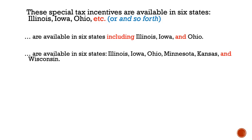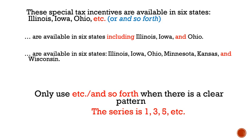Here's the rule: only use 'etc.' and 'and so forth' when there's a clear pattern, such as one, three, five, etc. We know what the pattern is and can figure out the rest of the numbers. If there's no pattern but you're just giving an example, take out 'etc.' or 'and so forth.'